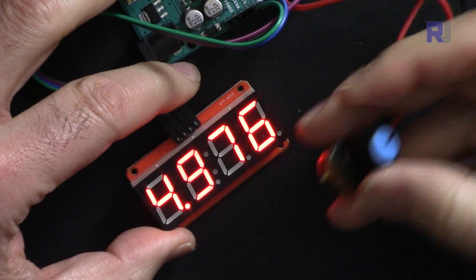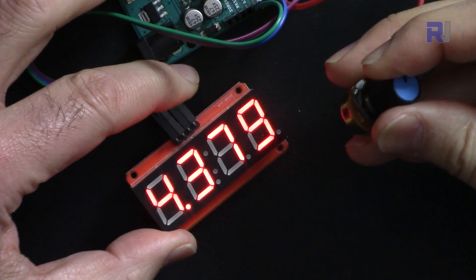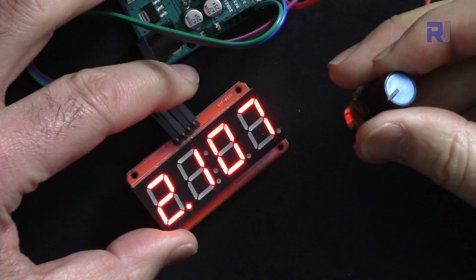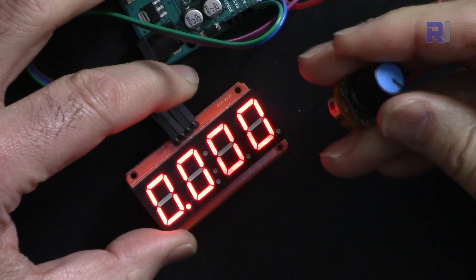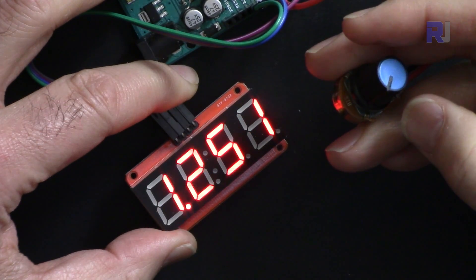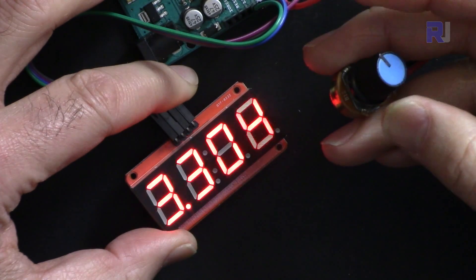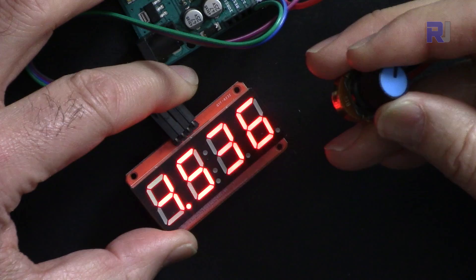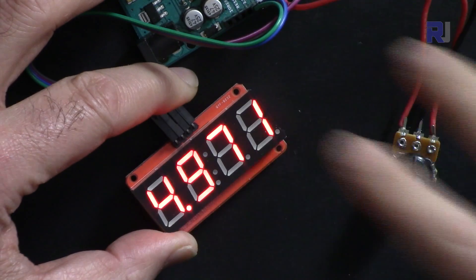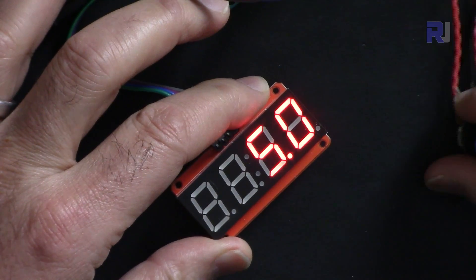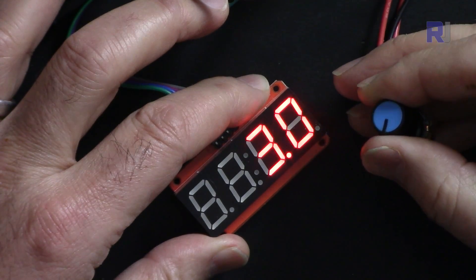And here is a demonstration of reading the potentiometer at 5 volts and rotating it. The voltage is reduced and read very nicely. This is now with three decimal places, and here I changed it to one decimal place.